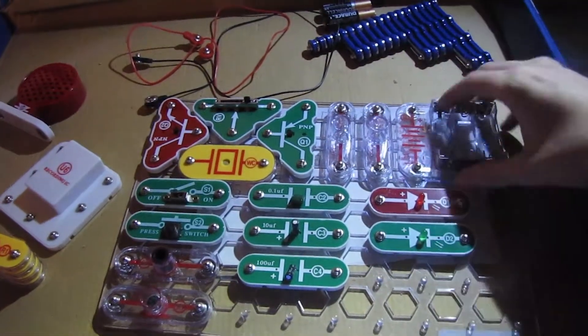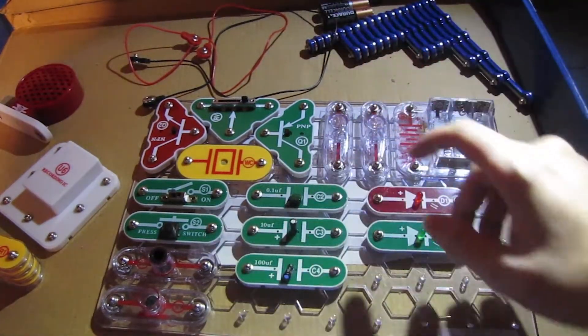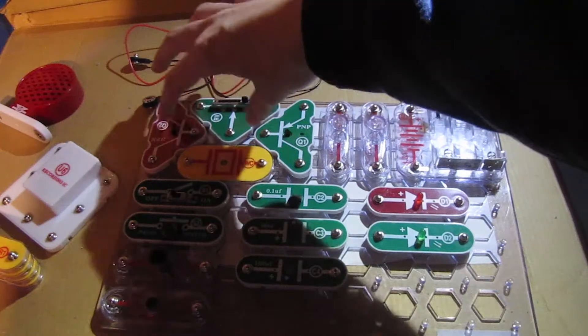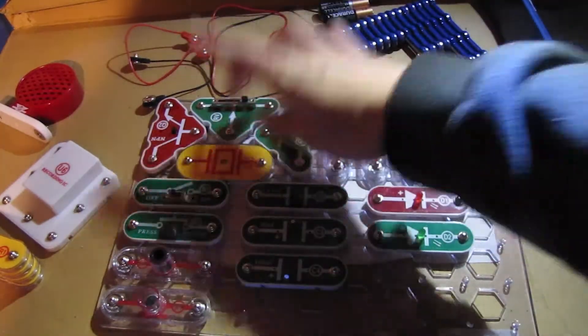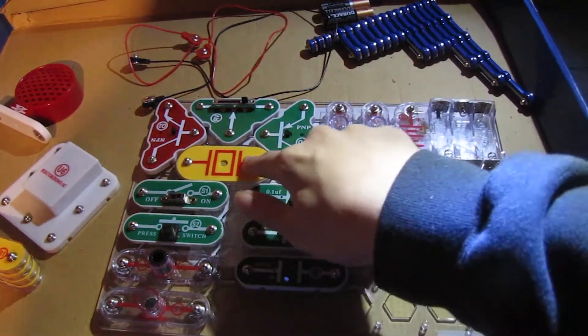And then let's move over here. We got a battery holder which takes three AA batteries, not included, two lamps, two transistors, an adjustable resistor, and a whistle chip.